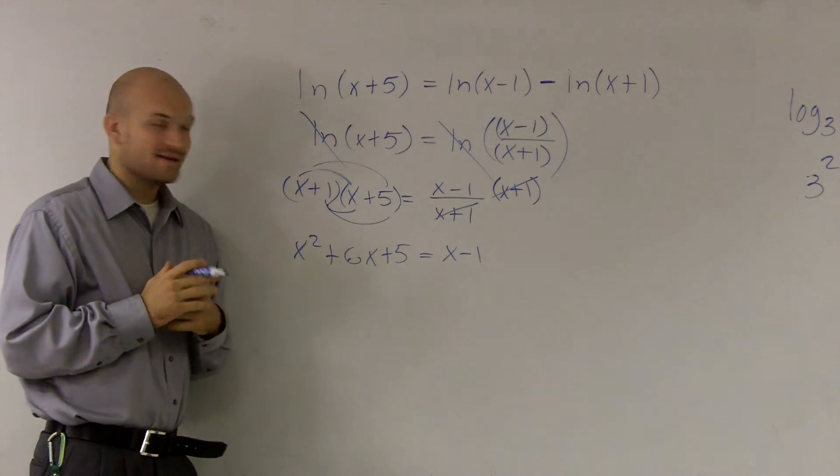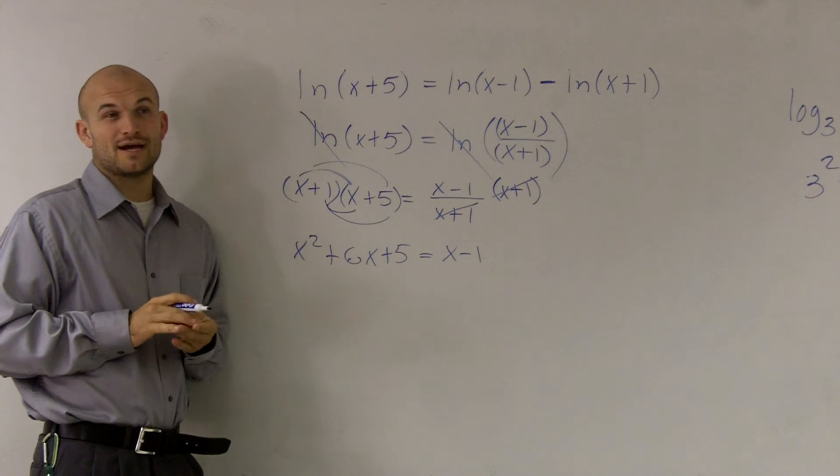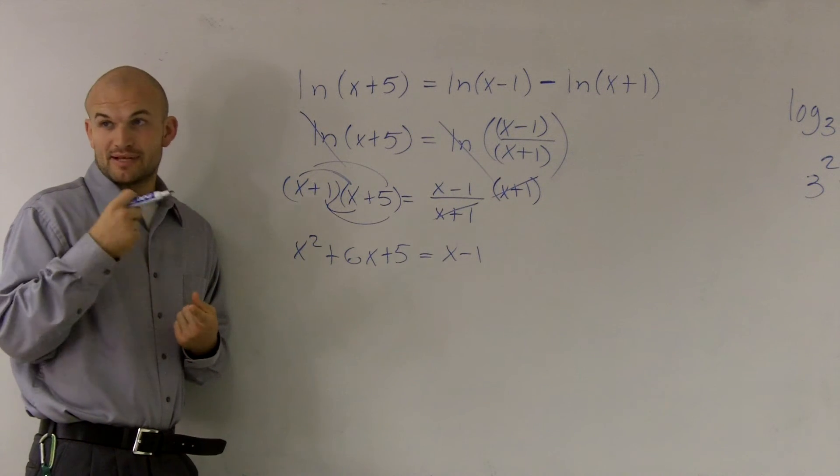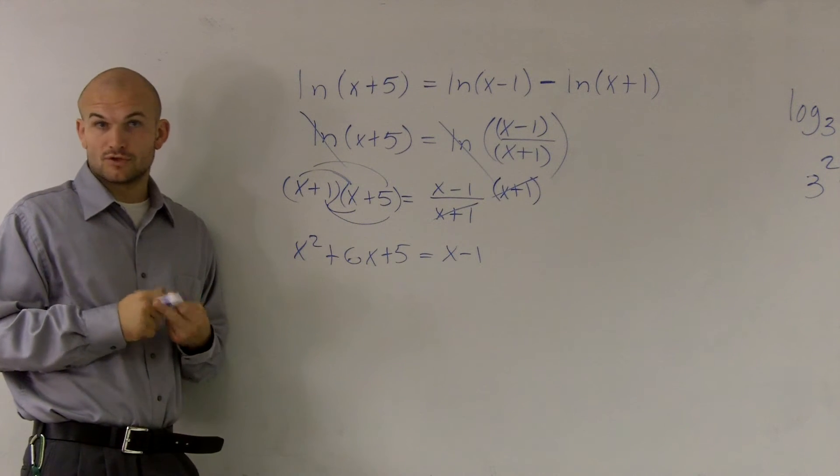So I get x²+6x+5 equals x-1. Now that I notice I have a square, I know my only way to solve for this is I'm either going to have to factor, complete the square, or quadratic formula. Those are my three options.